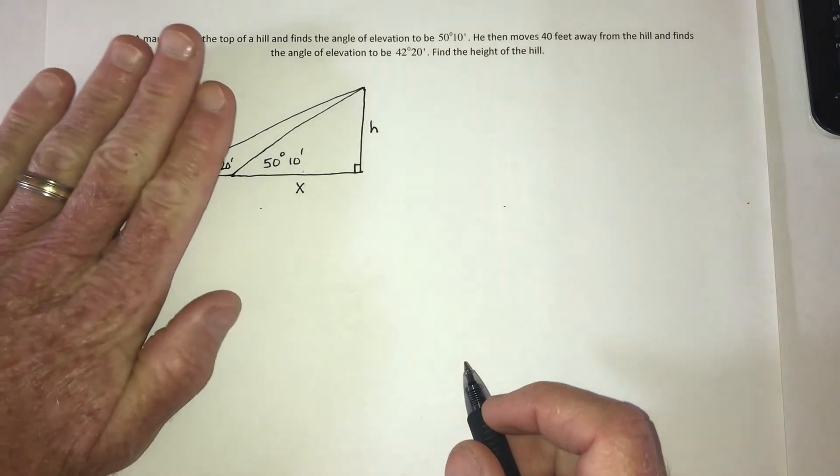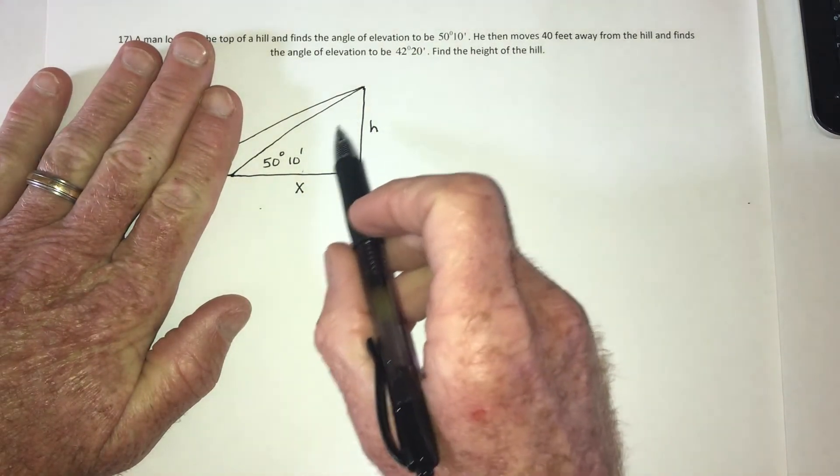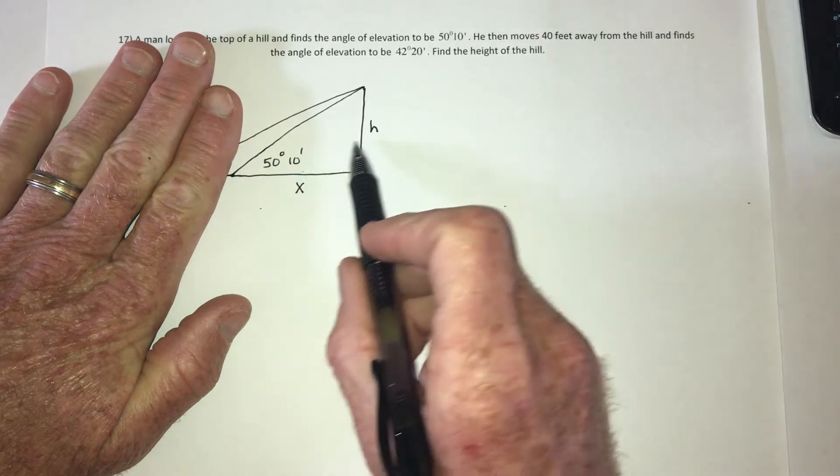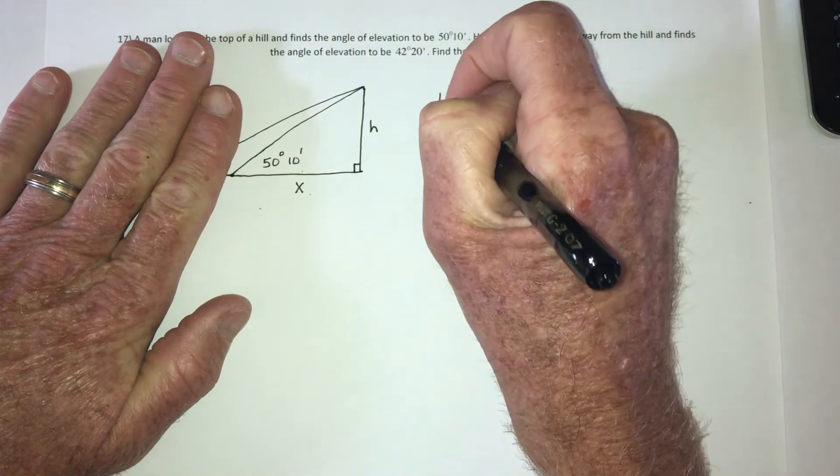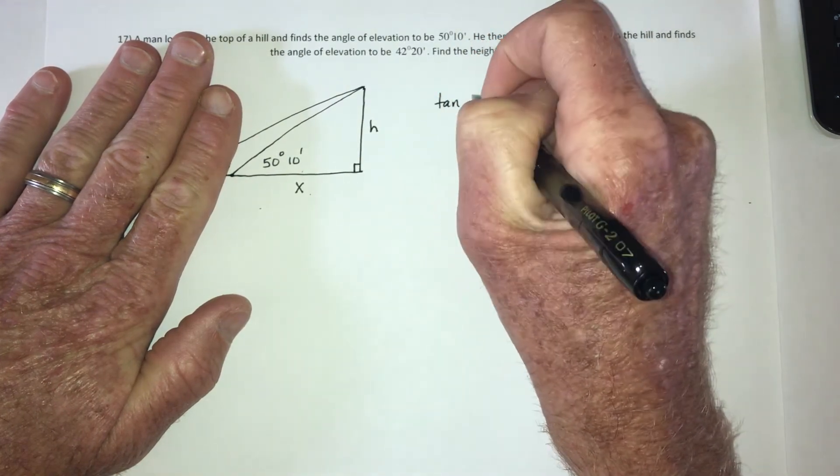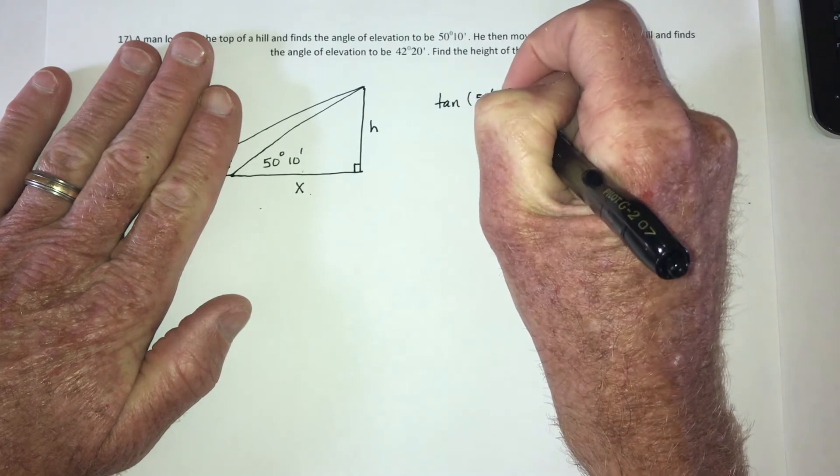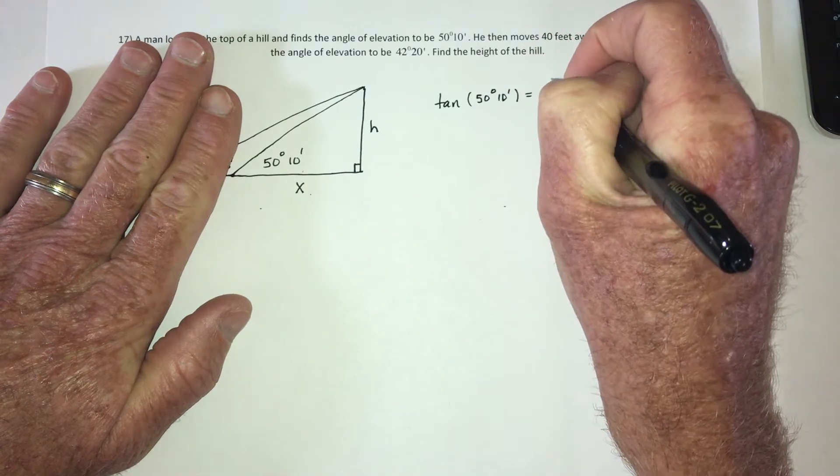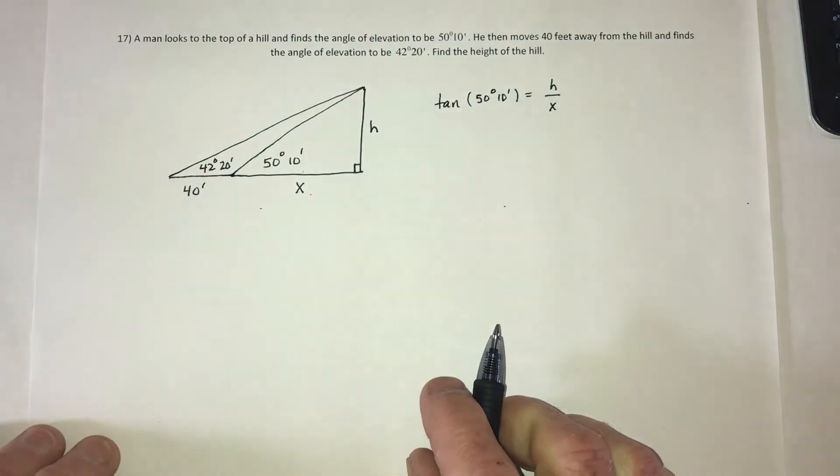So one equation is going to come from ignoring this part and just using this right triangle right here. So this would be, using this angle, this would be opposite and this would be adjacent. So that is tangent. So one equation is going to be tangent of 50 degrees, 10 minutes, equals opposite over adjacent.